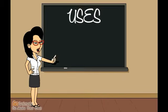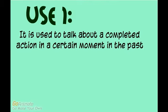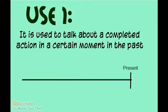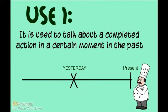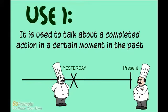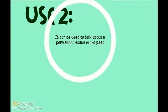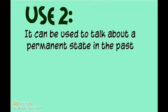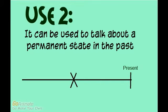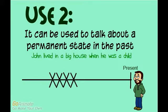Now, we will talk about the uses of this tense. First, it is used to talk about a completed action at a certain moment in the past. For example: Yesterday, he baked a cake. Secondly, it can be used to talk about a permanent state in the past. For example: John lived in a big house when he was a child.